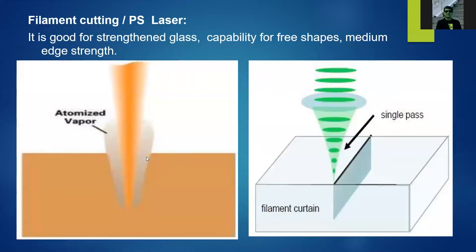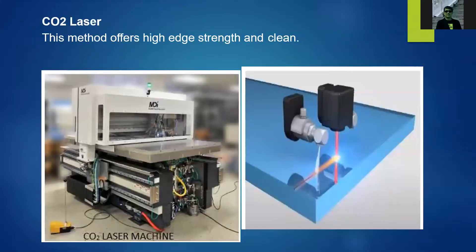We also have filament cutting or laser cutting, which is good for strengthened glass such as tempered or annealed glass. This method has the capability for free-shape cutting with medium edge strength. We also have CO2 laser cutting, which offers high edge strength and clean cuts. There is also a secondary cooling material that cools the glass as it is separated by the laser machine.